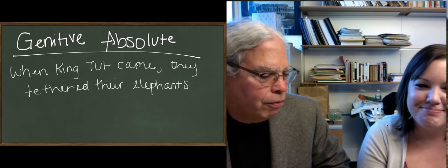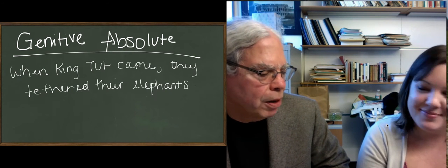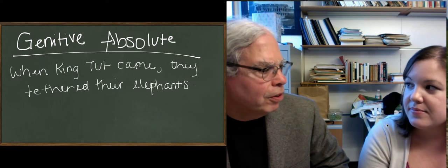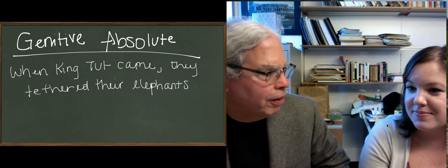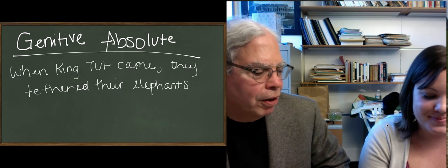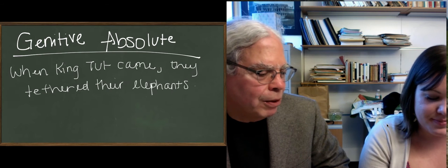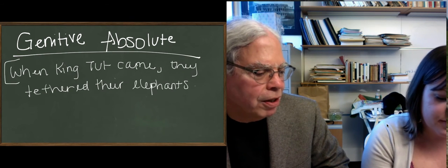So, what evolved was a way to do things like this with a participle, but then you have a serious problem because participles are adjectives. And what are they going to agree with? Well, if you think about it, when King Tut came, if it came into a participle, the answer is simple. It's going to agree with King Tut.